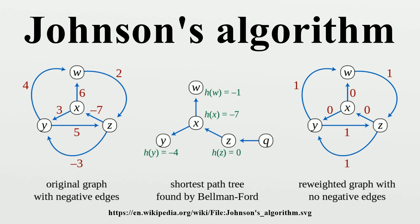To find for each vertex V the minimum weight H of a path from Q to V. If this step detects a negative cycle, the algorithm is terminated.